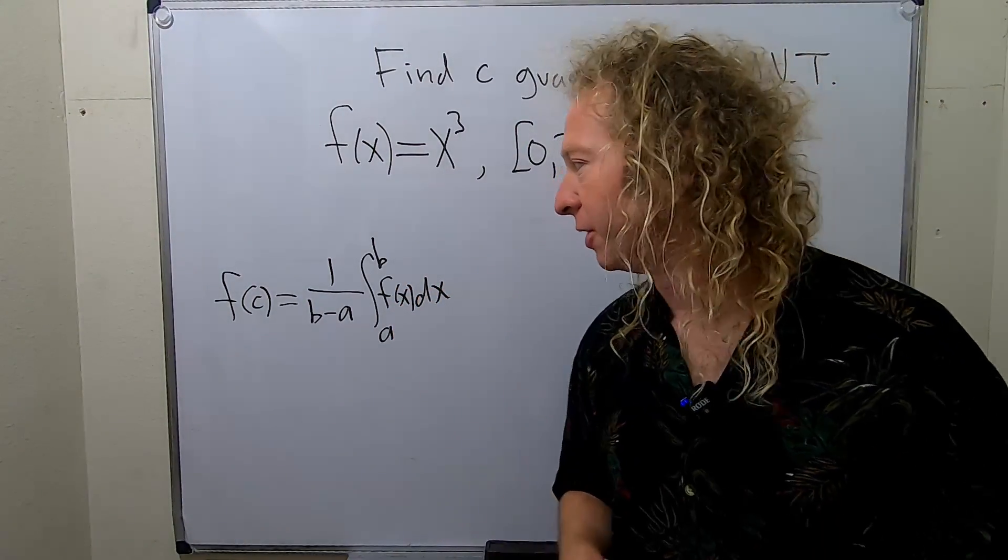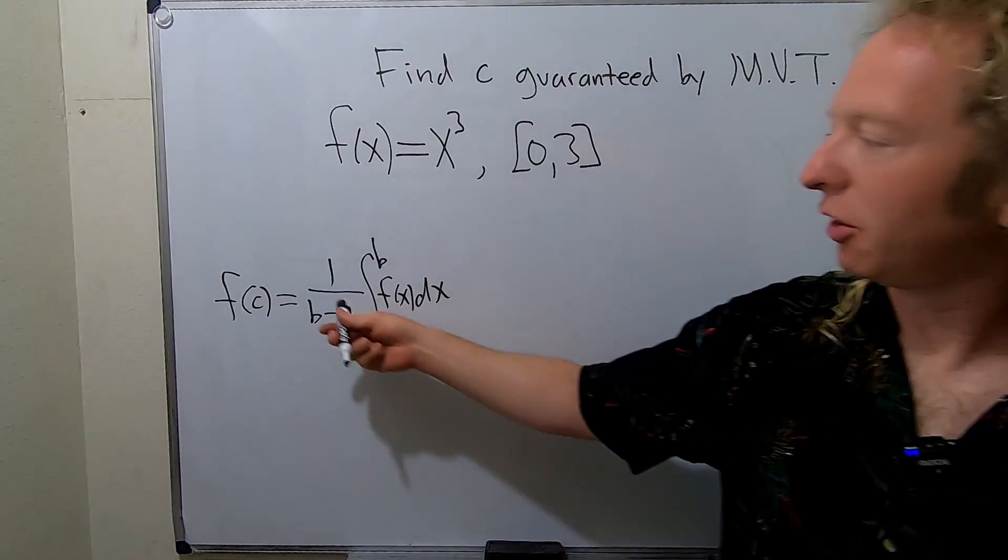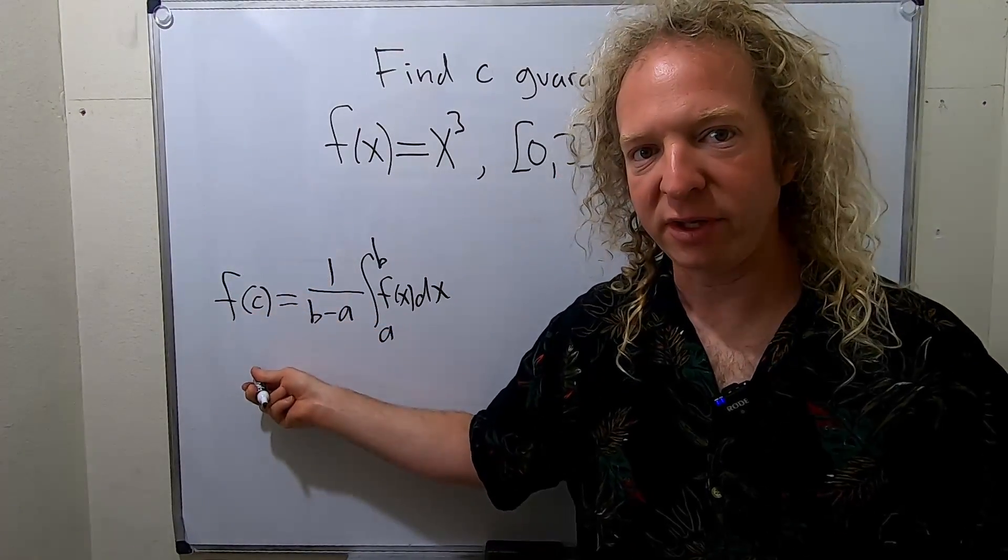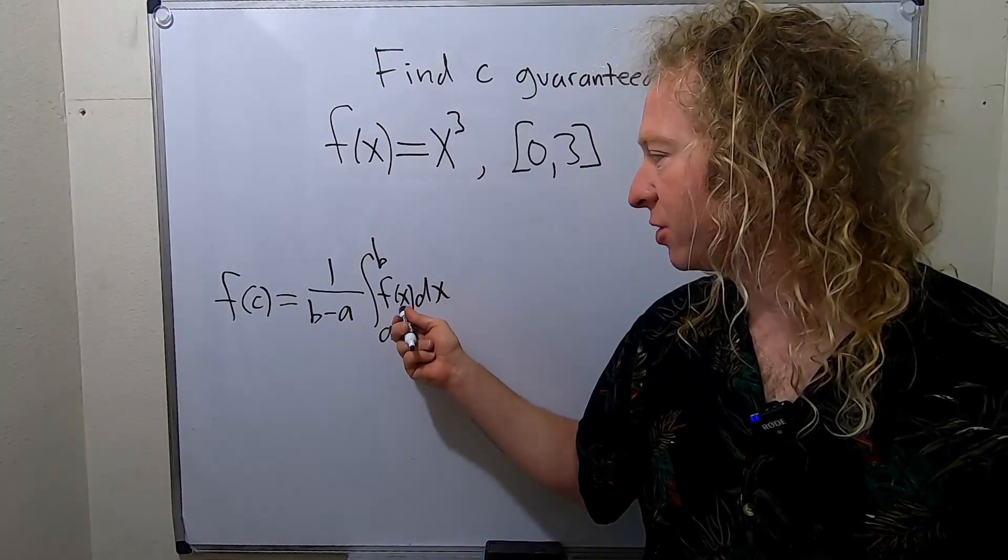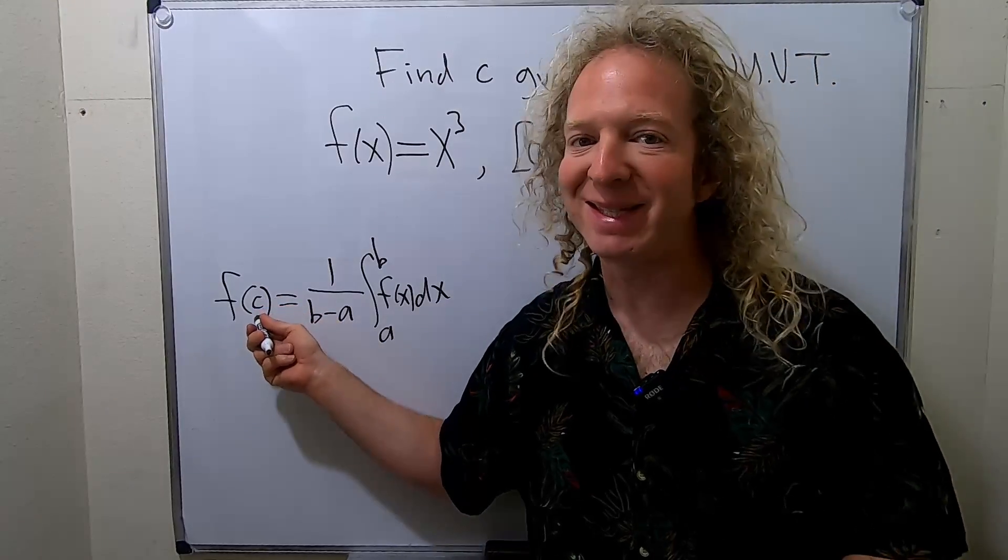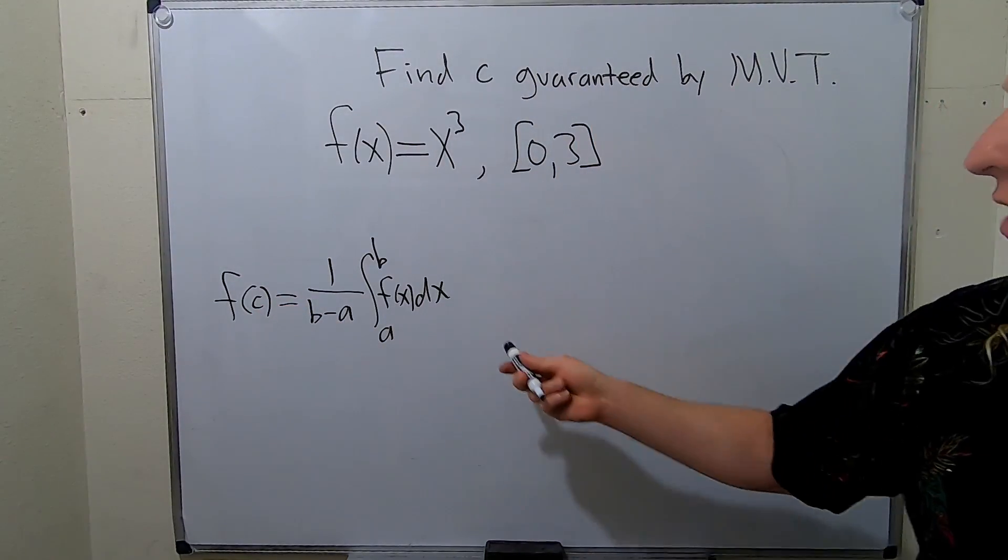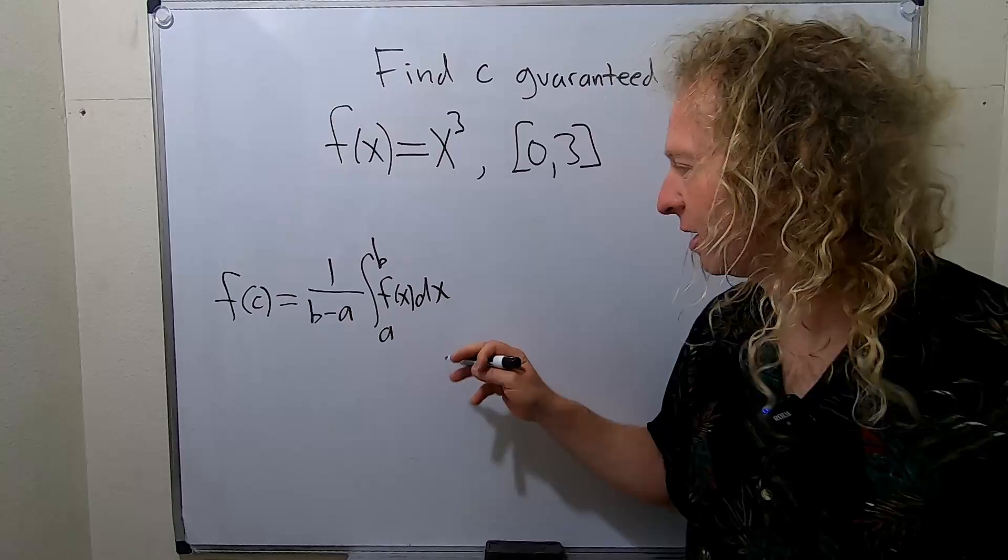So this is the formula that we have to use in this problem. This is a mean value theorem for integrals type problem. So this is called the average value of the function, this whole thing here. This is the average value of this function over a, b. We have to find c. So we basically have to work this out.